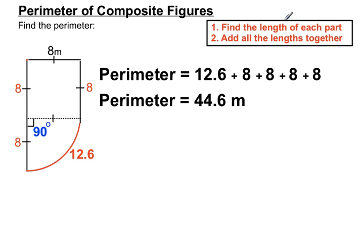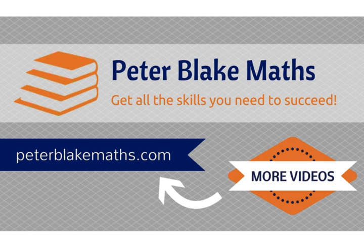So the steps: we find the length of each part — if it's straight we can find that quickly; if it's an arc length we use the formula to find that curved bit — and then we add all the lengths together to get the final perimeter of our composite figures. We're really just joining the idea of perimeter and the idea of arc length together. Hope that helps! If you need more maths help, peterblakemaths.com has heaps of videos to help you.